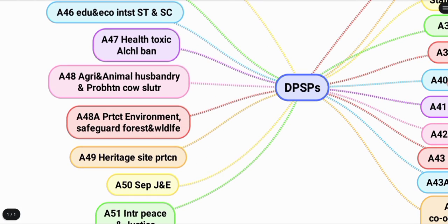Article 48: the mnemonic 'artalis' relates to audio/sound, representing agriculture and animal husbandry, including prohibition of cow slaughter.